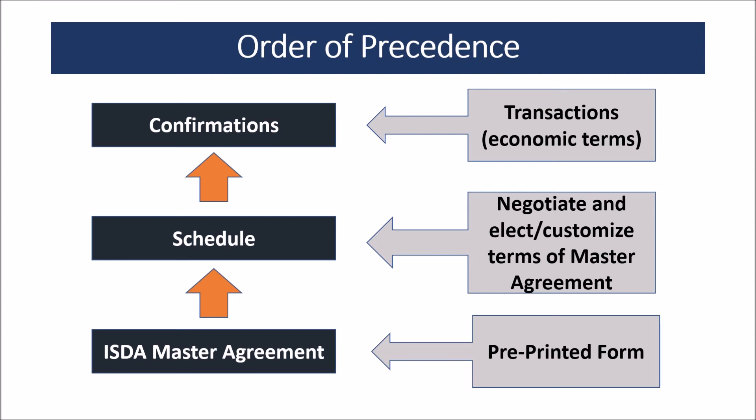Confirmations are the documents which record the details of the transactions performed between the parties. Confirmations usually record the economic terms. If a conflict of understanding occurs, then the confirmation will prevail over the master agreement and schedule. This picture shows you the order of precedence: how confirmation prevails over schedule, and schedule prevails over master agreement.